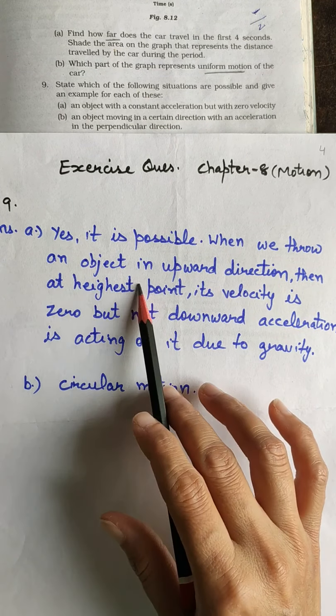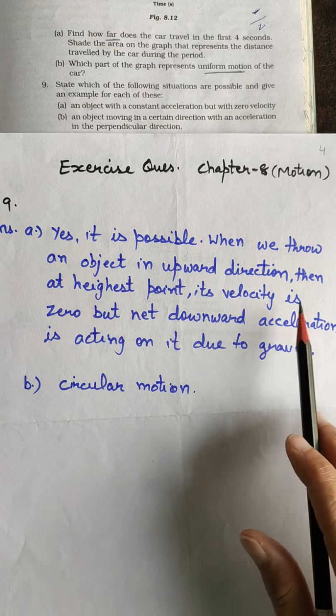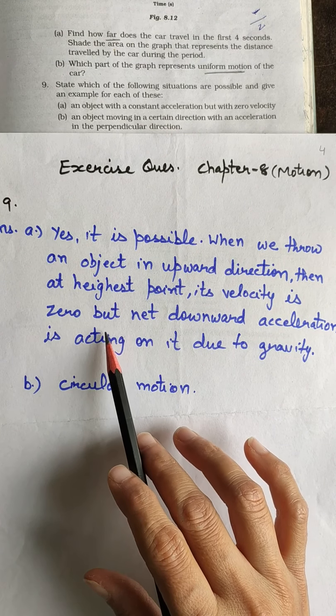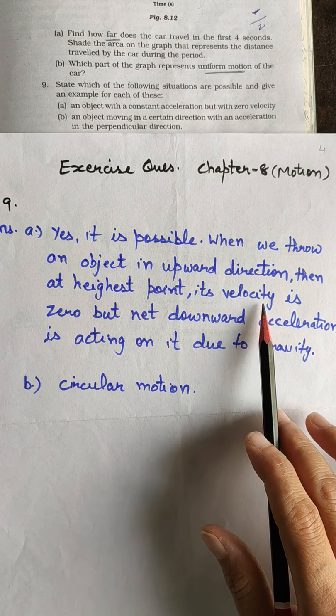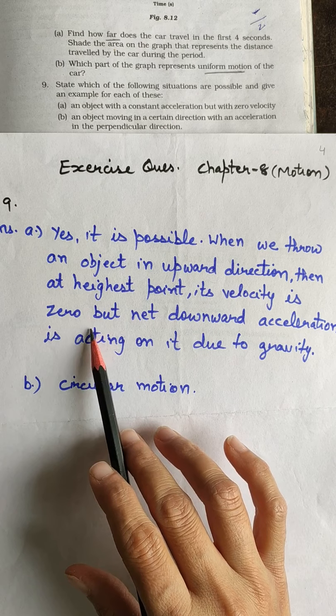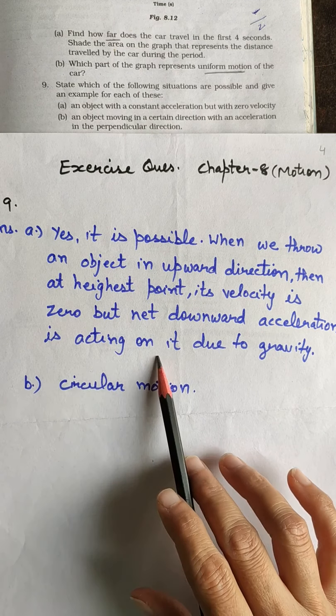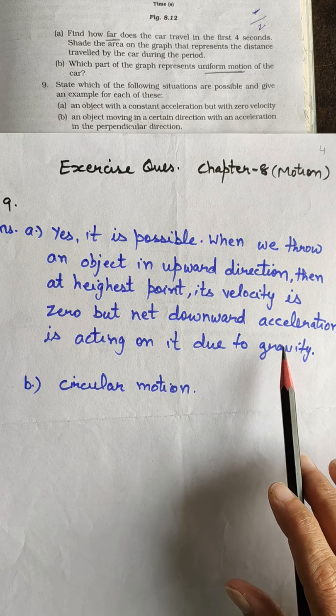When we throw an object in upward direction then at highest point its velocity is zero because at highest point it will stop for a moment. At that time its velocity is zero but a net downward acceleration is acting on it due to force of gravity.